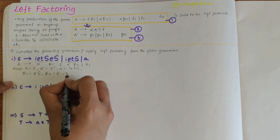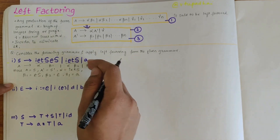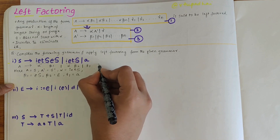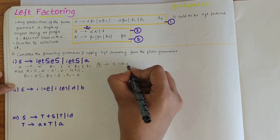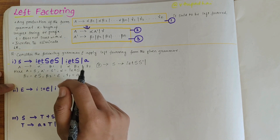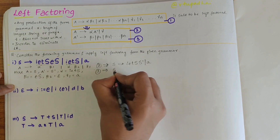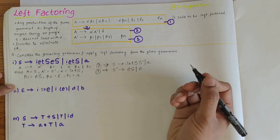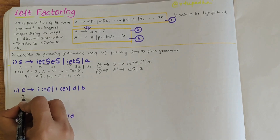Beta2 is nothing so we write epsilon, and gamma1 is 'a' — anything without alpha is referred to as gamma. Now writing the second equation: S derives ietS S', and for gamma we have only 'a'. The third equation is: S' derives eS | epsilon. This is the answer for the first grammar.